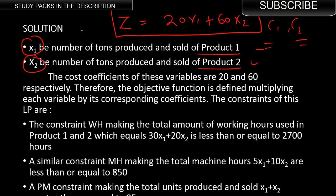Therefore, the objective function is defined as: g = 20·x1 + 60·x2. g is nothing but your profit. 20 is the number of millions made from one ton of product one, so the total profit from product one is 20 × x1. Similarly, total profit from product two is 60 × x2. When you add them, you get the total profit — and that has to be maximized.